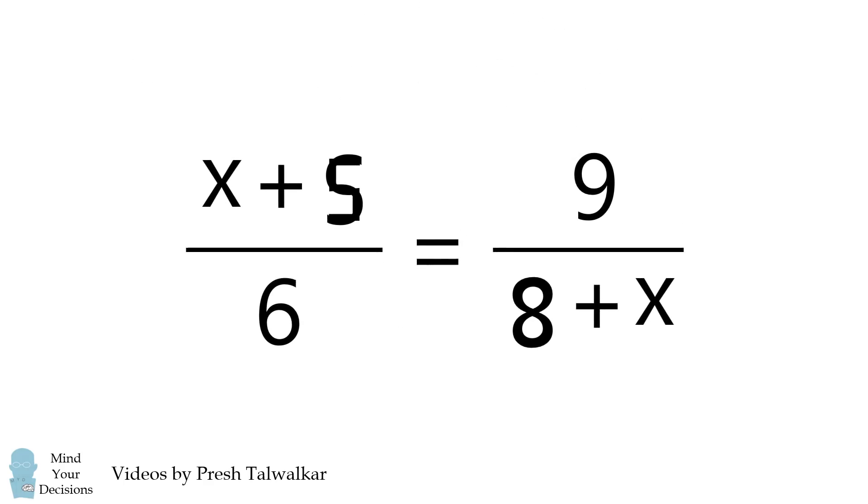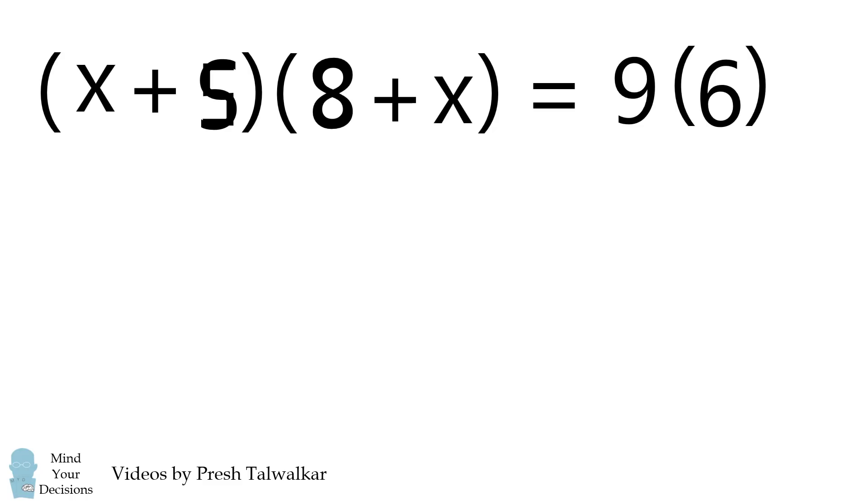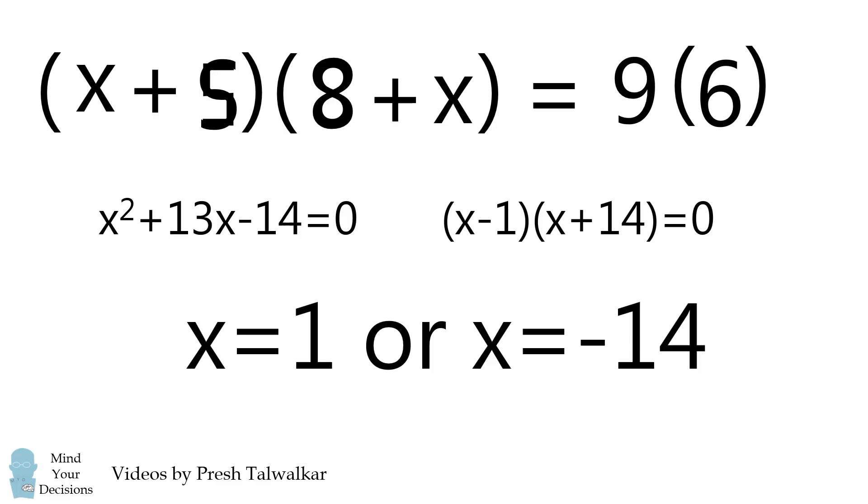We'll solve this just as before. We'll cross multiply, then we'll expand and simplify, and end up with a quadratic equation. We end up factoring just as before, and we get the same solutions x is equal to 1 and x is equal to negative 14.